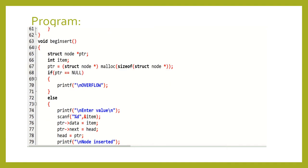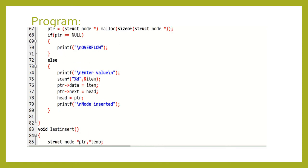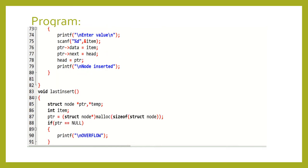For begin insert, a new node is created and named 'ptr', with memory allocated to it. If the new node equals null, it prints 'overflow' — there is no place to insert the element. Otherwise, the user enters a value; 'ptr->data = item', 'ptr->next = head' since this is the first element, and then 'head = ptr'. It prints 'node inserted successfully'.